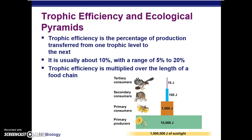Birds and mammals have very low production efficiencies, in the range of 1% to 3%, because they have a high cost of endothermy — maintaining their homeostasis. Fish have a production efficiency of about 10%, which is better. Insects and microorganisms have efficiencies of 40%, compared to the 1% to 3% of birds and mammals. This becomes interesting when thinking about the numbers of insects versus the number of mammals on Earth.